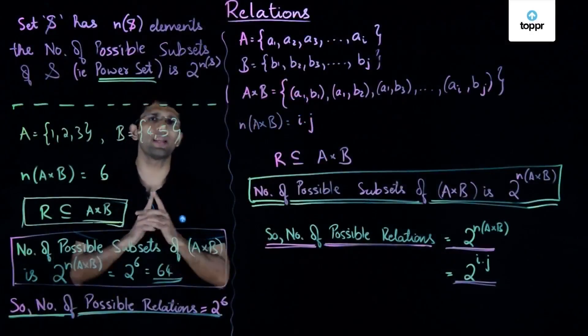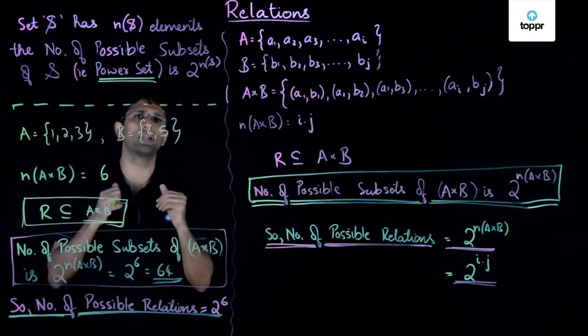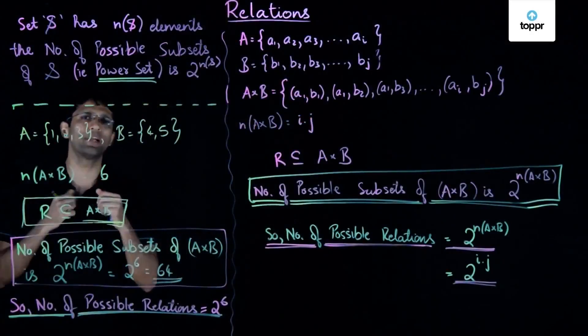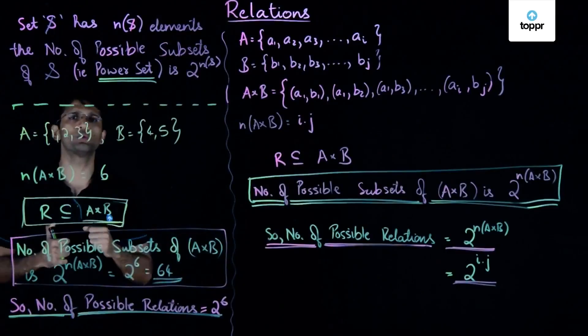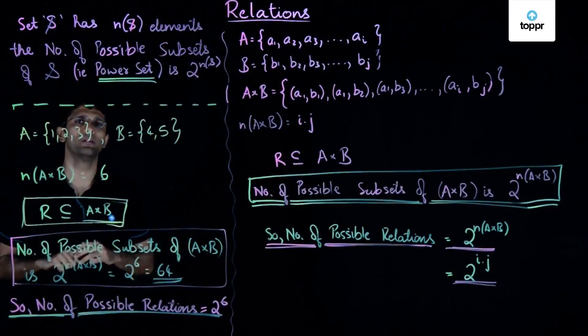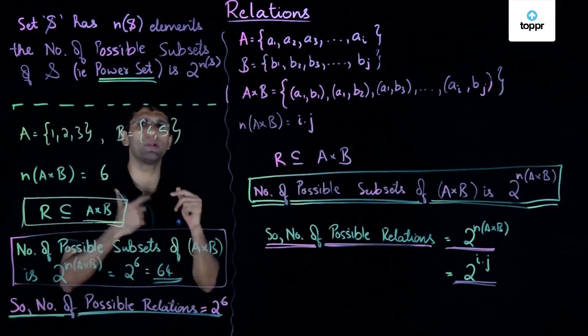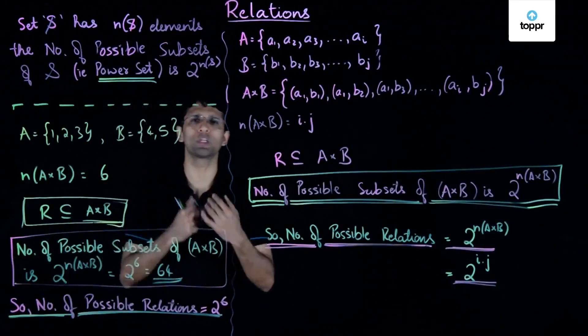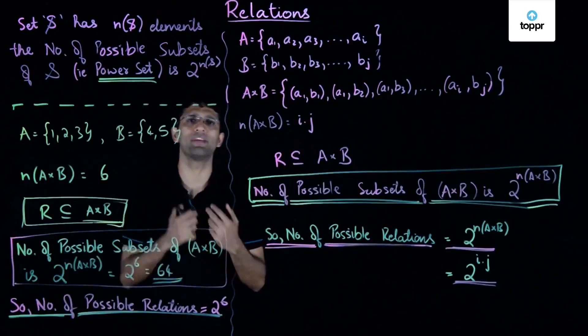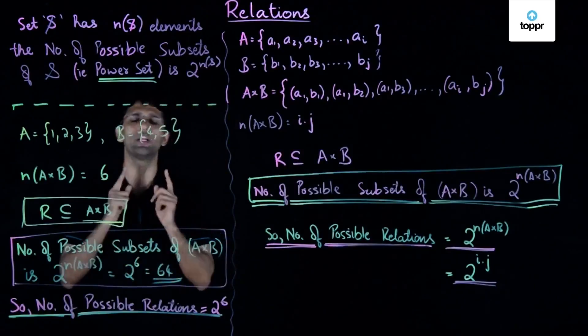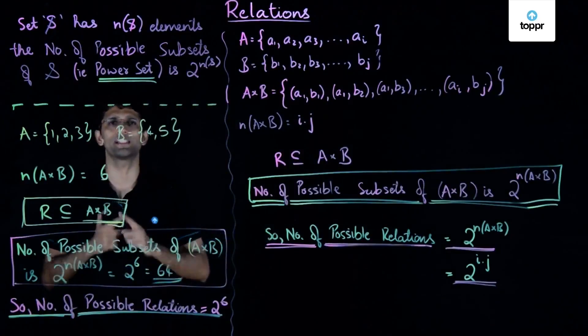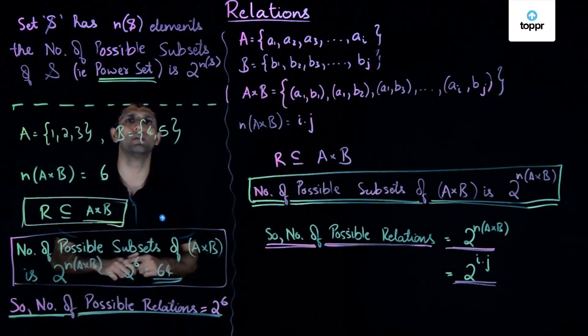Let us now try to find an expression for the number of possible relations between two sets A and B. We are looking at the maximum number of different possible relations that we can define between two non-empty sets A and B.